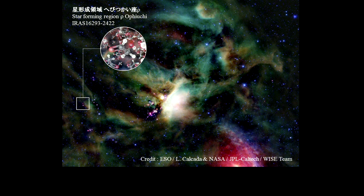アイラス16293という若い星です。実は、アルマは、ここの星の周りに糖を発見しました。皆さんがコーヒーに入れる砂糖とよく似た物質です。糖は実は、生命に必須の物質です。つまり、地球ができる前に、生命の材料はすでに宇宙にあったことを示しています。スライドは以上です。